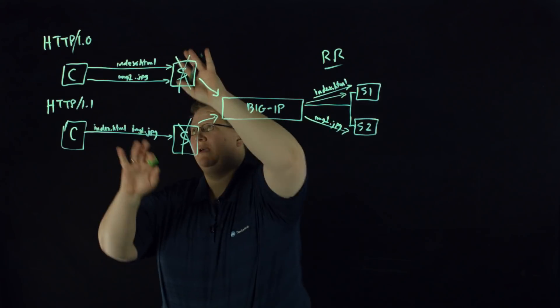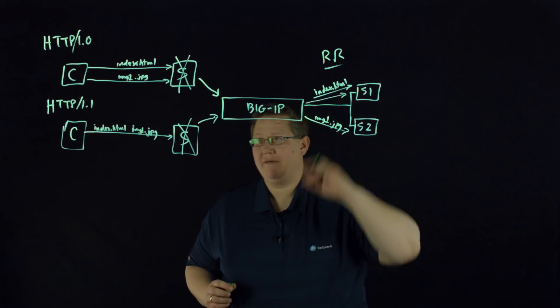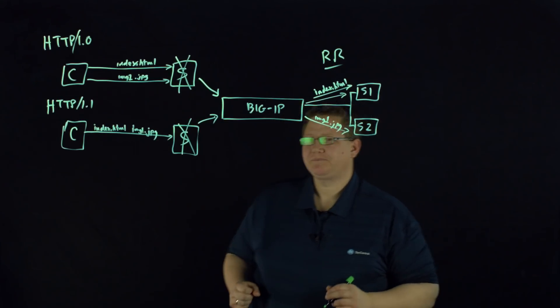BigIP handles the HTTP 1.0 and 1.1 depending on how you have your HTTP profile set up independently like that.